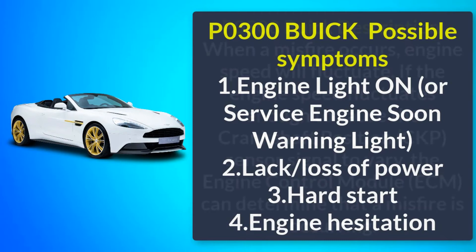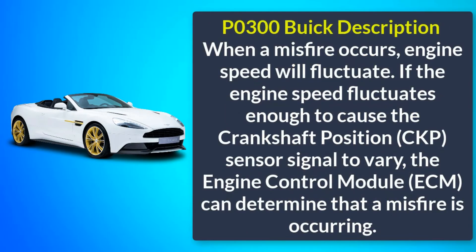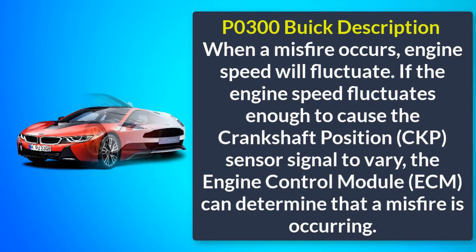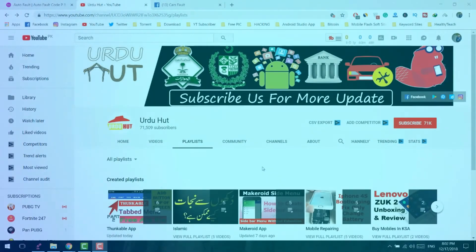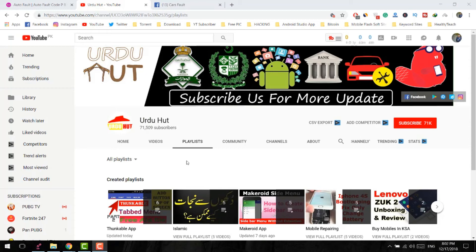Let's talk about the description of P0300. When a misfire occurs, engine speed will fluctuate. If the engine speed fluctuates enough to cause the crankshaft position sensor signal to vary, the engine control module can determine that a misfire is occurring.